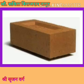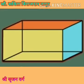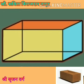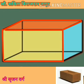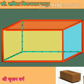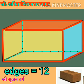Let's start with the brick. The brick's shape is like this. Start to count the edges: 1, 2, 3, 4, 5, 6, 7, 8, 9, 10, 11, 12 edges. Brick has a total of 12 edges.